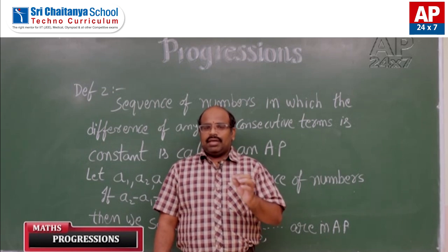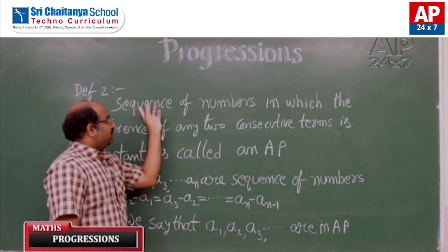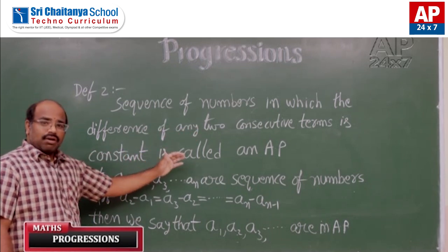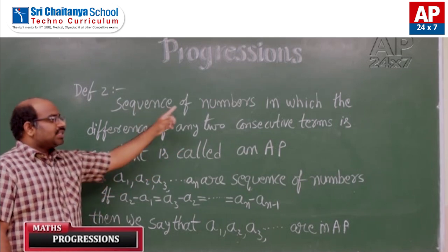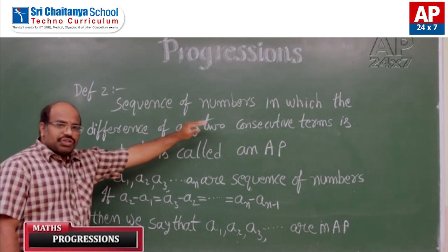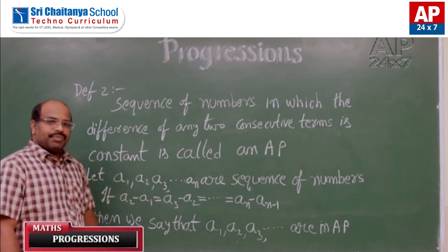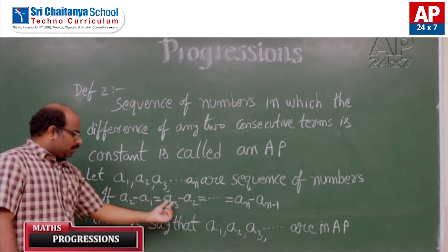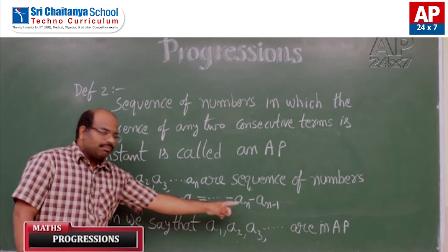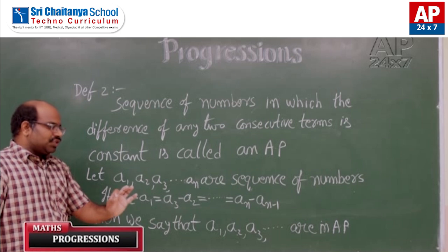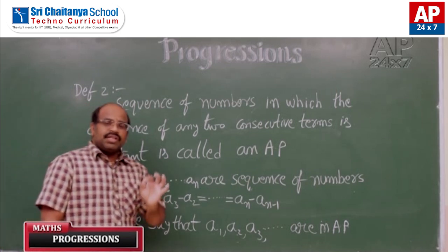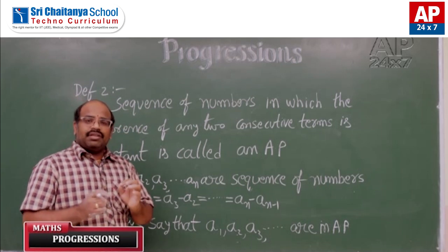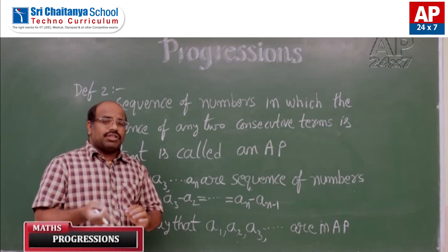Let us redefine arithmetic progression. A sequence of numbers in which the difference of any two consecutive terms is constant is called an AP. If a1, a2, a3, ..., an are the sequence of numbers, and if a2 minus a1 equals a3 minus a2 equals ... equals an minus a(n-1), then we say that a1, a2, a3, ... are in arithmetic progression. Using this definition, we can verify whether a given sequence is in AP or not.